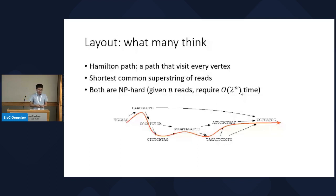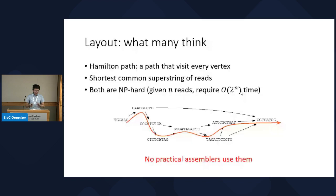The problem with the Hamiltonian path is that it's NP-hard. If there are N reads, it will take 2^N time to compute. So if N equals a billion, this is a huge number — basically not computable. In practice, no practical assembler uses this.